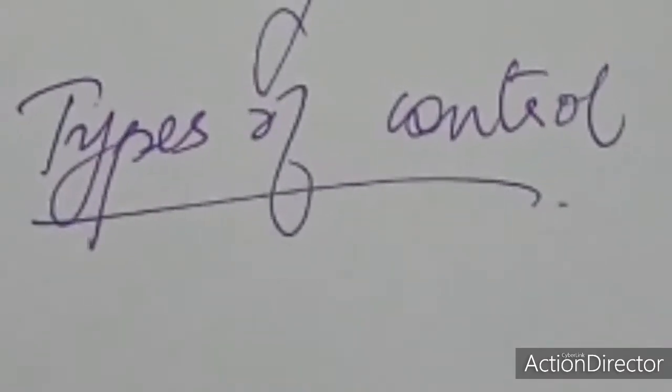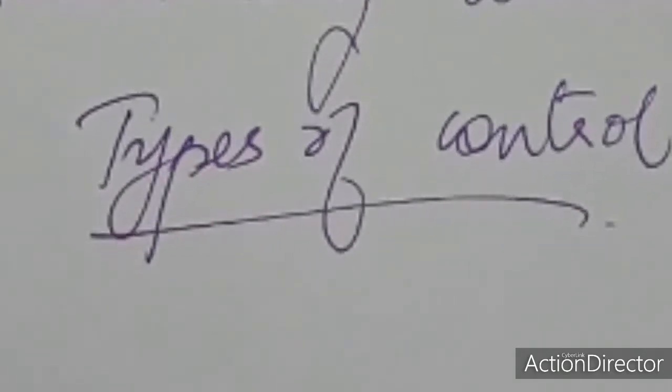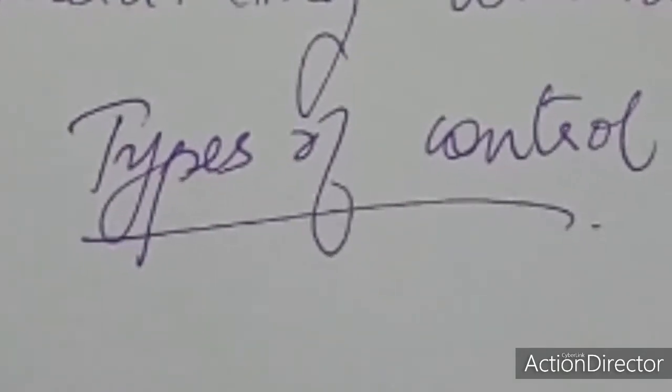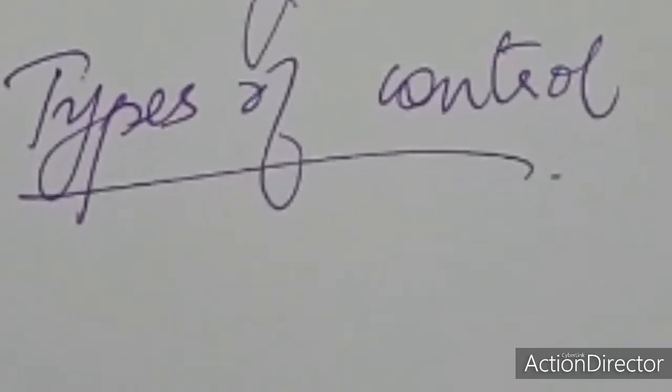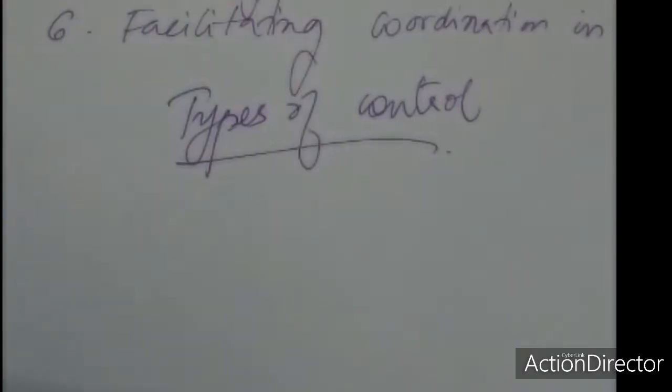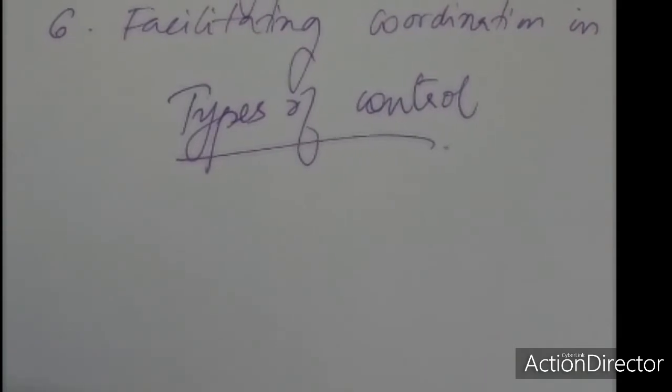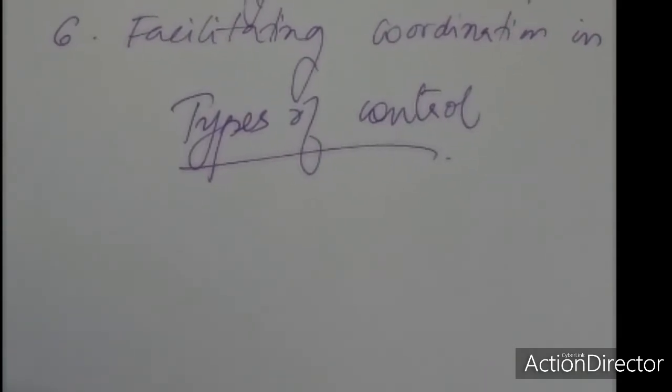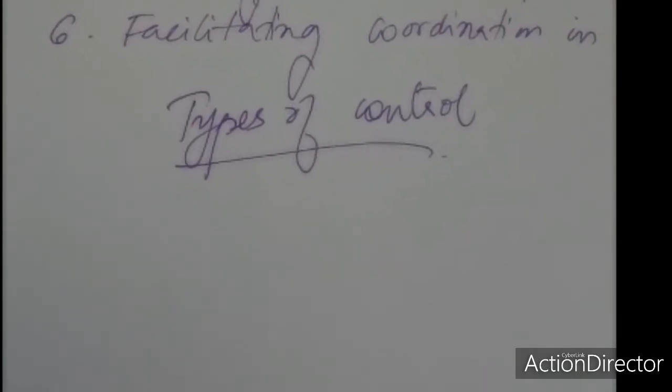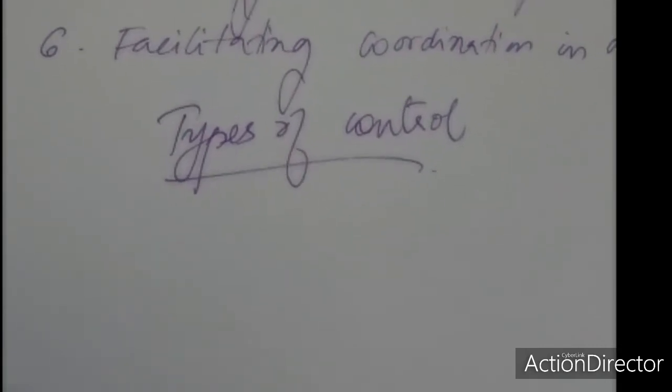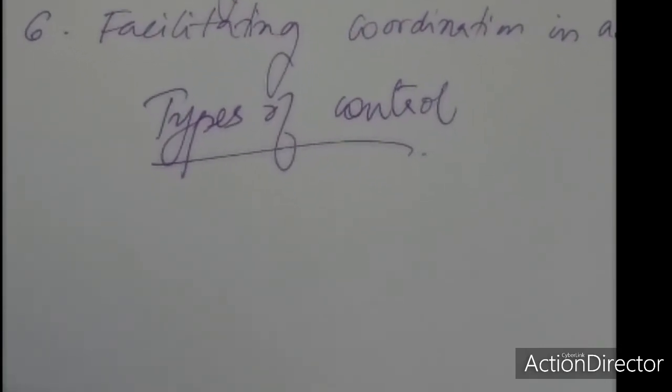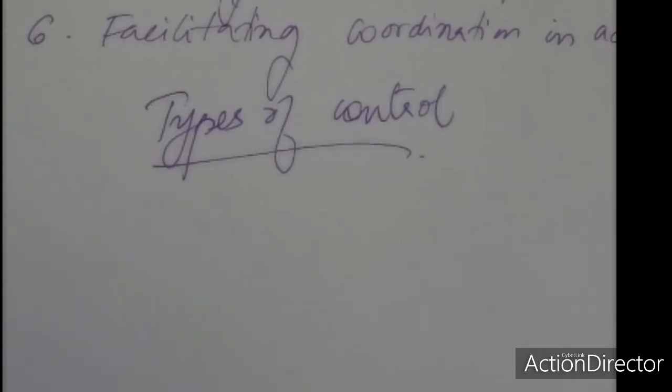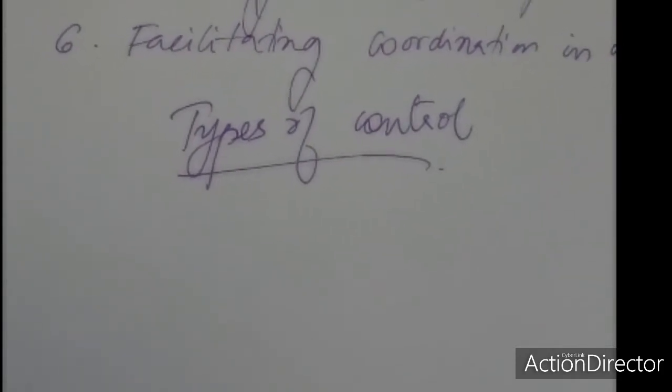In our last class, we learned about controlling, what it really means and the processes or importance of controlling. In this class, we'll be learning about types of control. Controlling is needed in an organization for gaining successful results at the end of the process. Types of control are divided on the basis of time at which the control is applied.